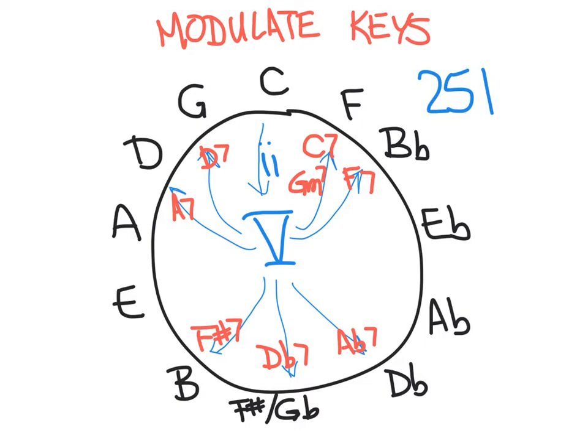So what would be the 2 of each of those keys? Well, a G minor would be of F, and C minor would be the 2-5-1 of B-flat. The 2 of G would be A minor going to D to G, and then an E minor goes to A goes to D.